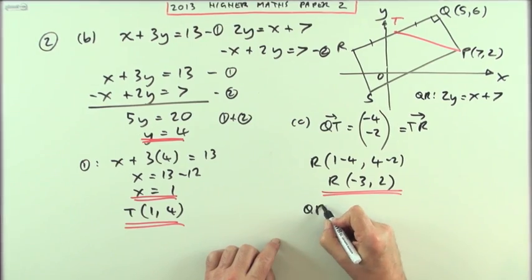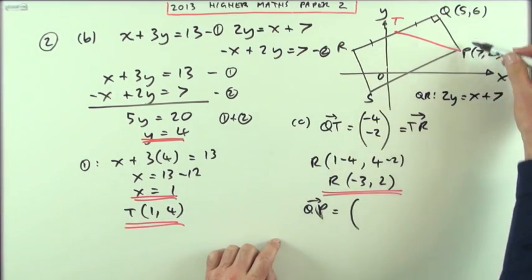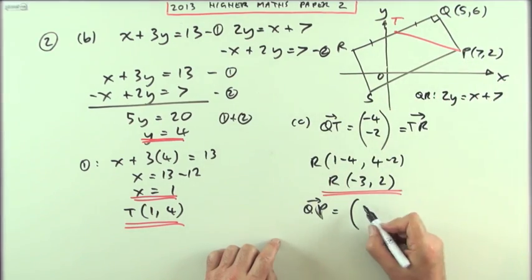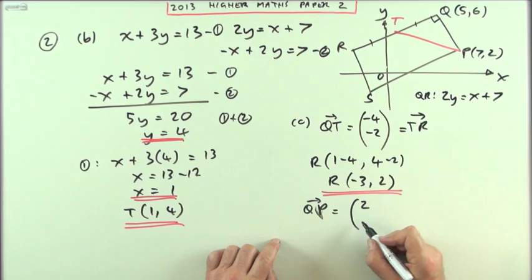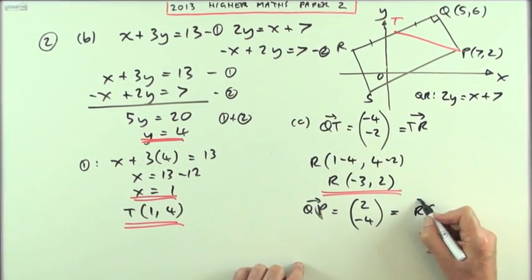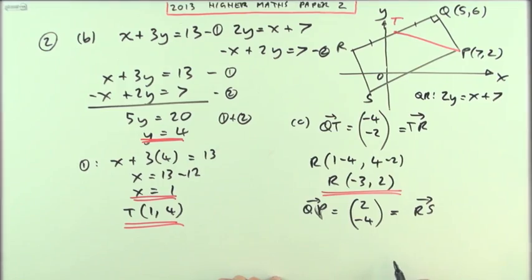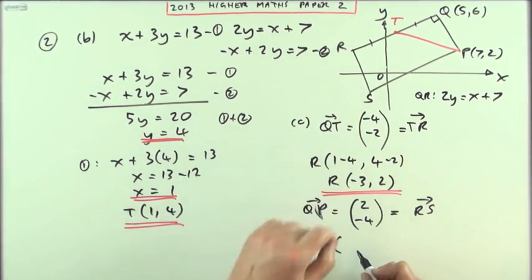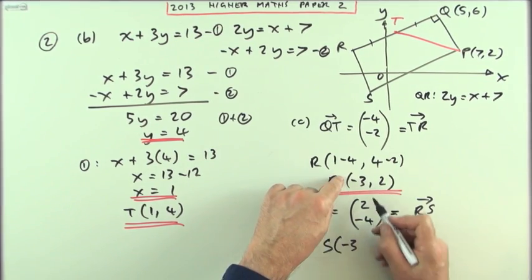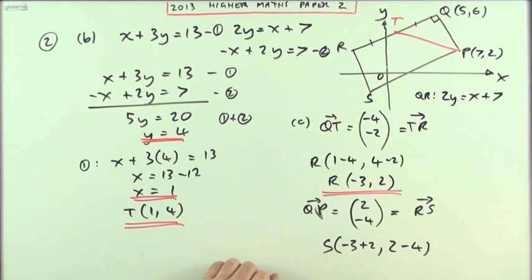And then by the same method, going from Q to P - that move from Q to P would be going from 5 to 7, is 2, and from 6 to 2 is negative 4. So that'll be the same as the move from R to S. Going from R to S, it's going to be go forward 2, down 4. So I can put S down now. Starting at R, which I had, so negative 3 plus 2, and 2 take away 4. So S will be the point negative 3 plus 2 is still negative 1, 2 take away 4 is negative 2.